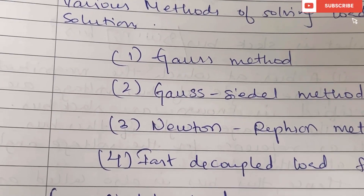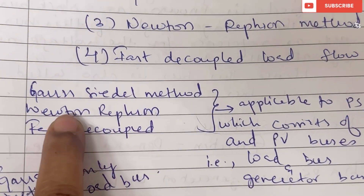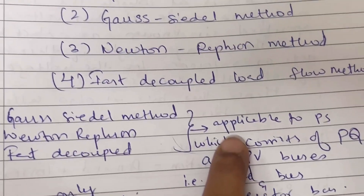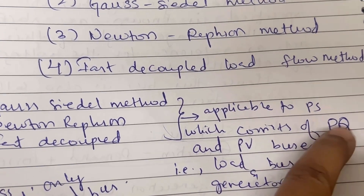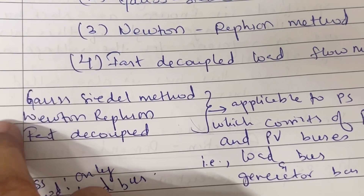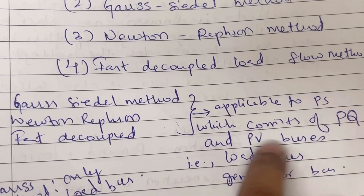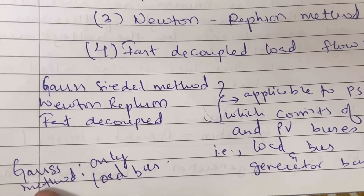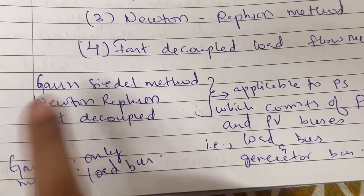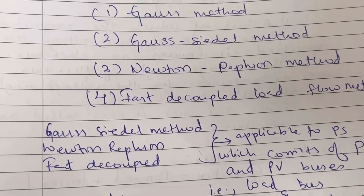The Gauss Seidel method, Newton Raphson method, and Fast Decouple method are applicable to power systems which consist of real and reactive PQ and PV buses — that is, load bus and generator bus. The Gauss method, the first method, is used only for load bus, that is PQ only. Remember: these three methods are for load and generator buses, while Gauss method is only for load bus.